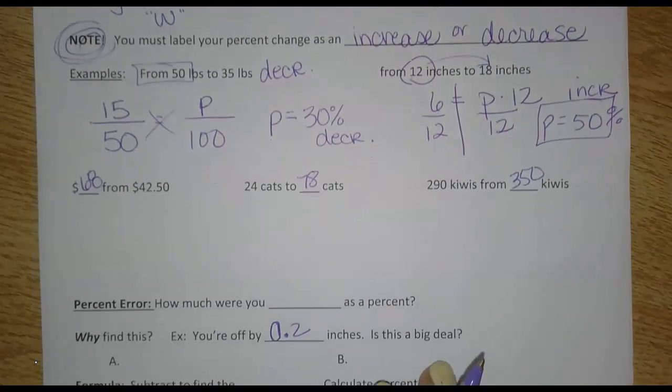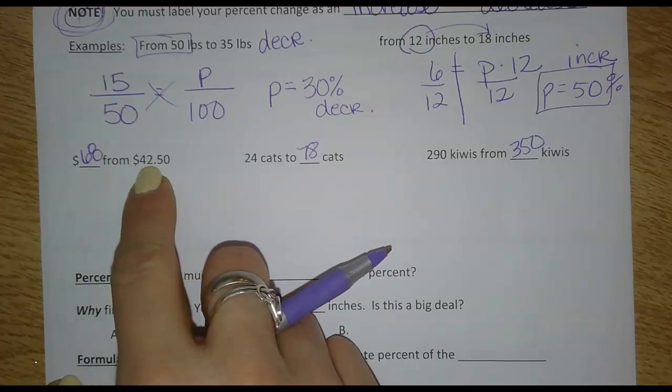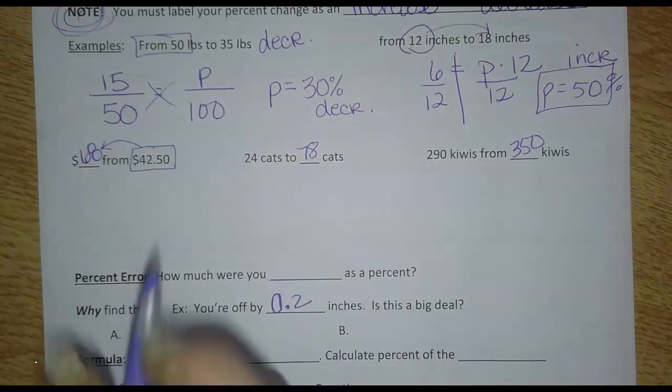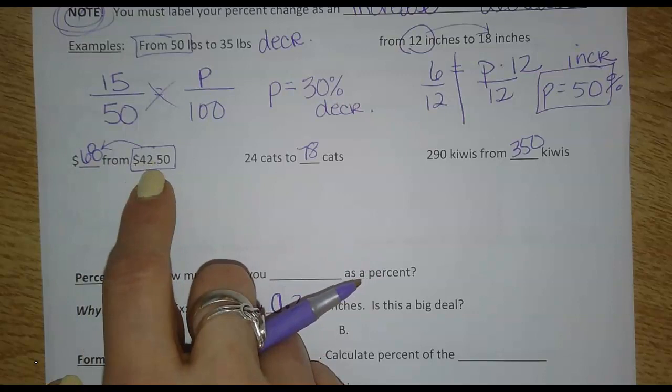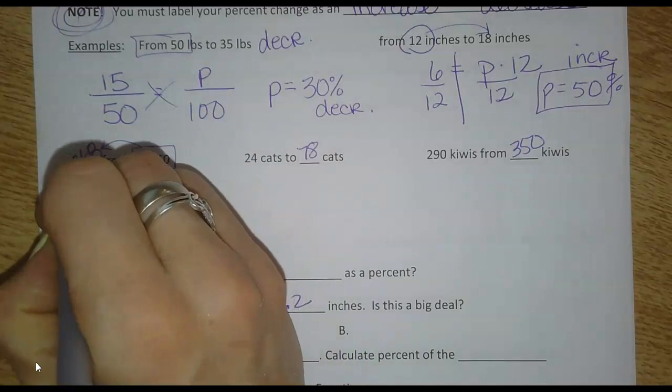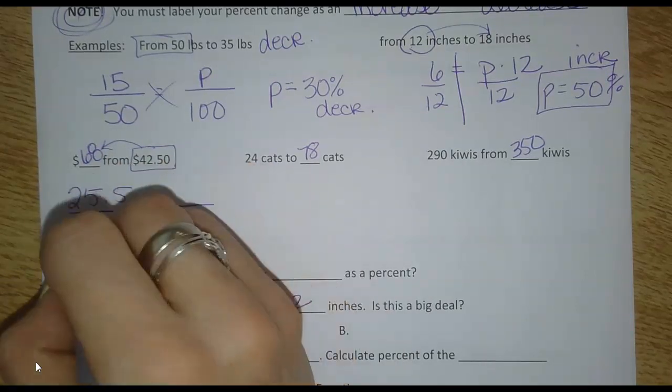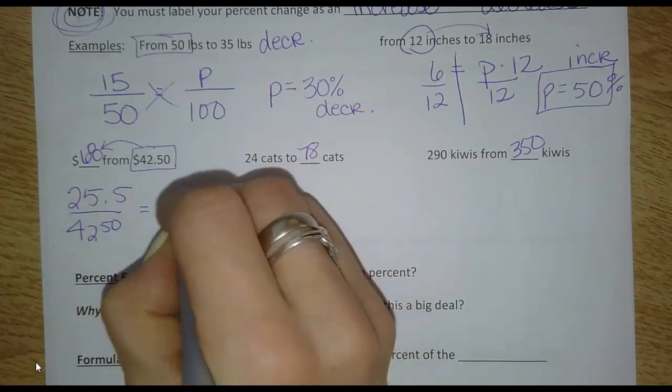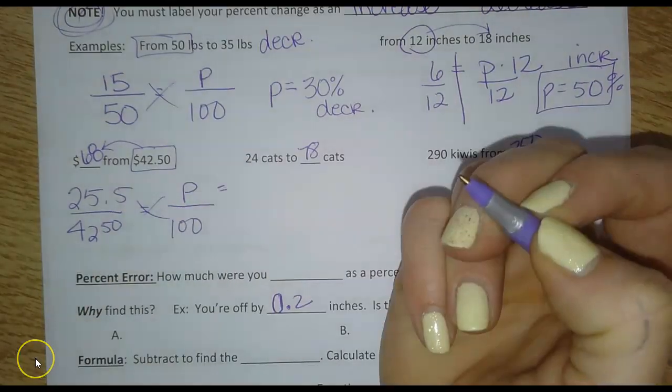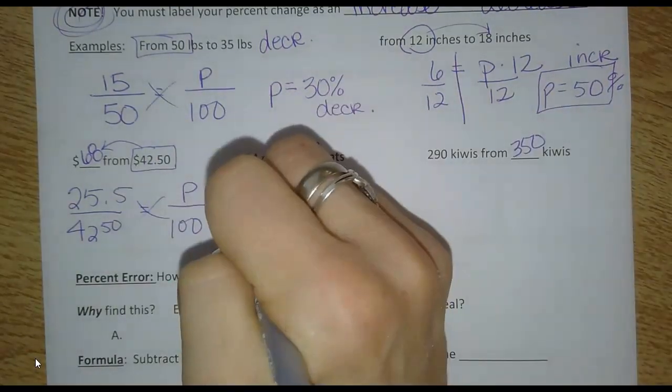Okay, I'll do one more. And then there's two examples for you to do. So if it goes from $42.50 to $68, then this is the original number. Just based on the wording, it's this now and it came from $42.50. So this is the original. So I'm still going to subtract to find the difference, which I'll just put in my calculator, and I get that it went up $25.50. The original number was $42.50. I'm looking for P. And then I'll cross multiply that. So you can pause and type that in quick. And I get that P is equal to 60 percent. And it went up, so increase.